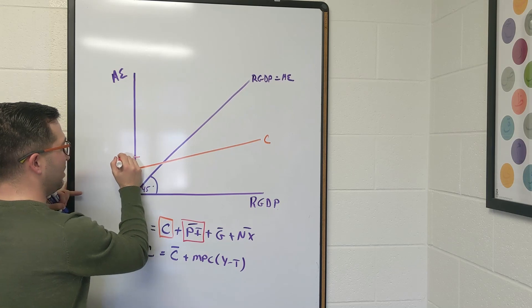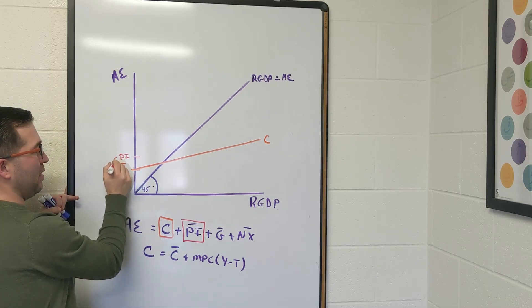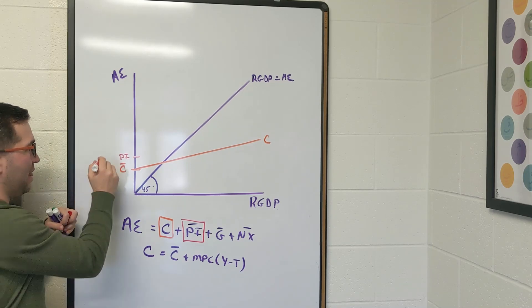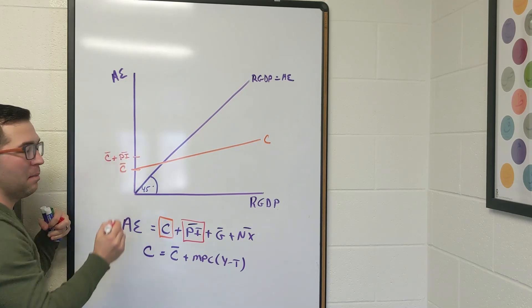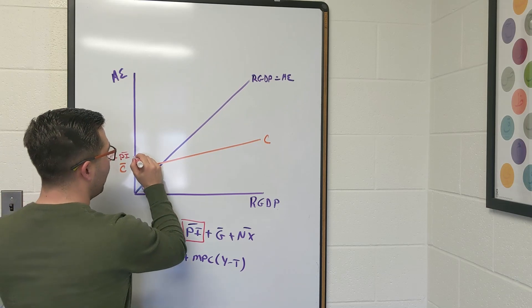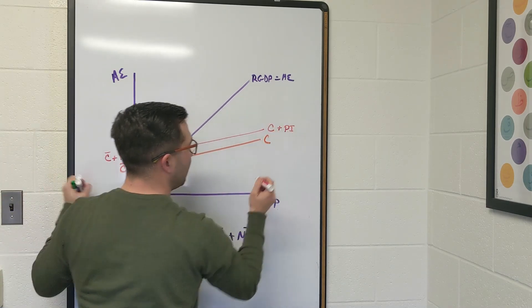Let's just say planned investment is going to be the difference between here and here. So what that tells me is that this is consumption plus planned investment—my autonomous consumption plus planned investment. And this is going to be parallel, and I have C plus planned investment.